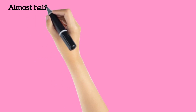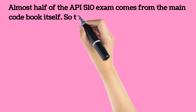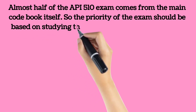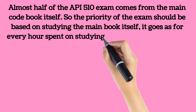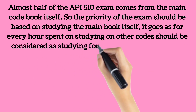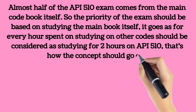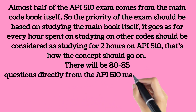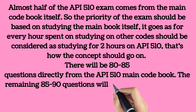Almost half of the API 510 exam comes from the main codebook itself, so the priority should be studying the main book first. For every hour spent studying other codes, consider it equivalent to studying 2 hours on API 510. There will be 80 to 85 questions directly from the API 510 main codebook. The main codebook has about 150 pages, meaning roughly 1 question per 2 pages. The remaining 85 to 90 questions come from almost 2,000 pages of supporting documents, meaning 1 question per 18 pages.